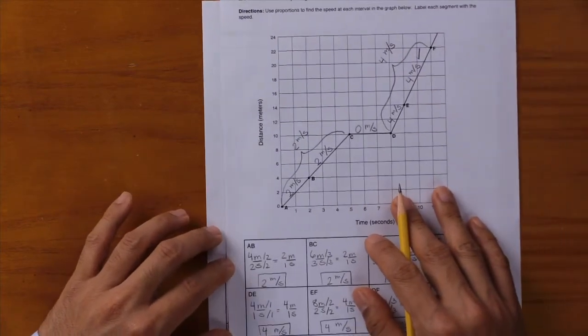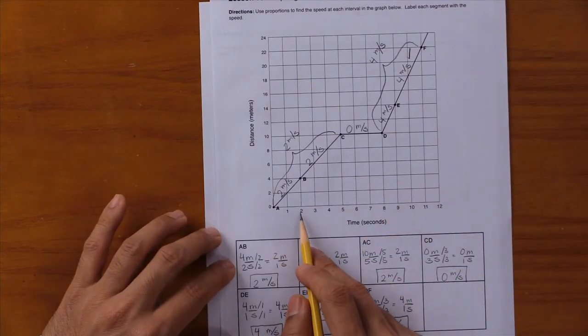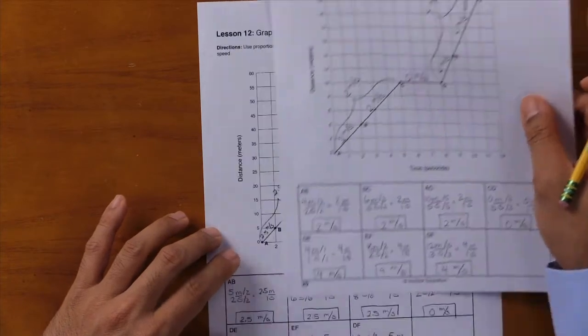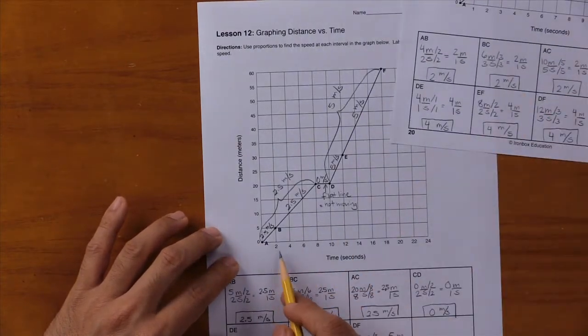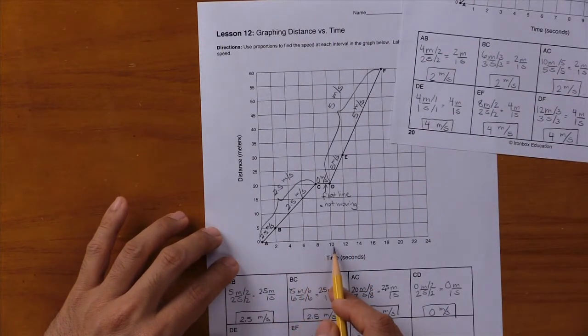Here in lesson 10, the time is measured in intervals of 1 second, but in lesson 12 it's measured in intervals of 2 seconds, so just be really careful there.